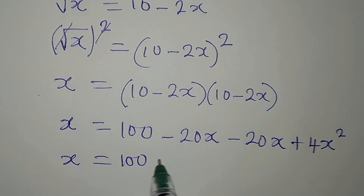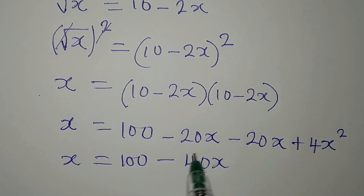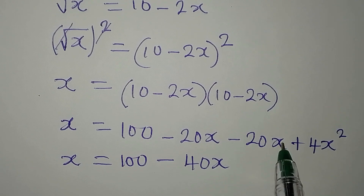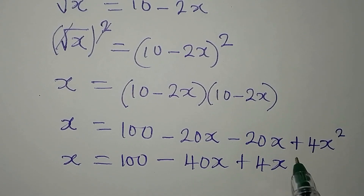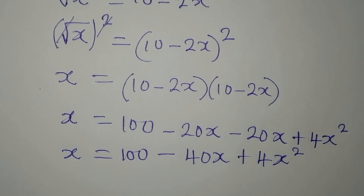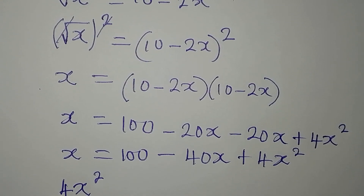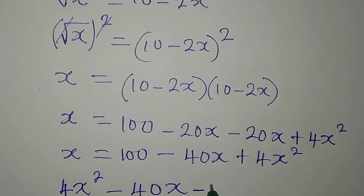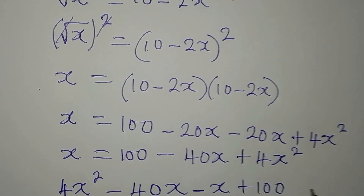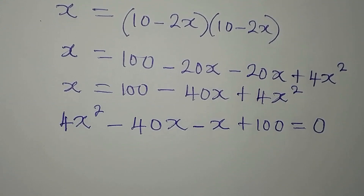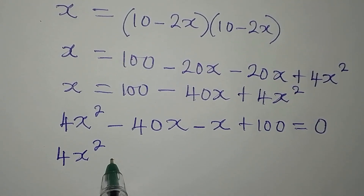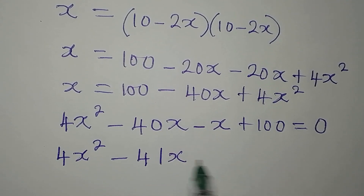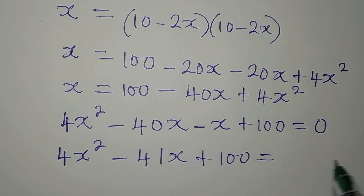We have x equals 100 minus 40x plus 4x squared. Rearranging, 4x squared comes first, followed by minus 4x, then minus x, then plus 100, and everything is now equal to 0. So we have 4x squared minus 41x plus 100 equals 0, because minus 40x minus x is minus 41x.